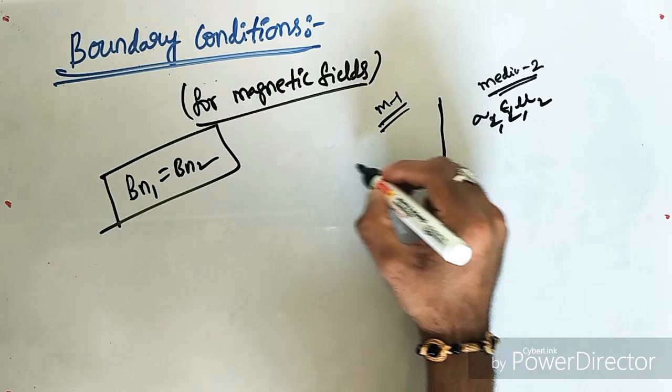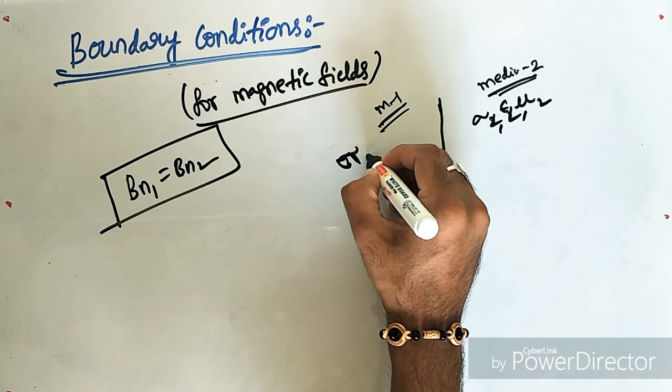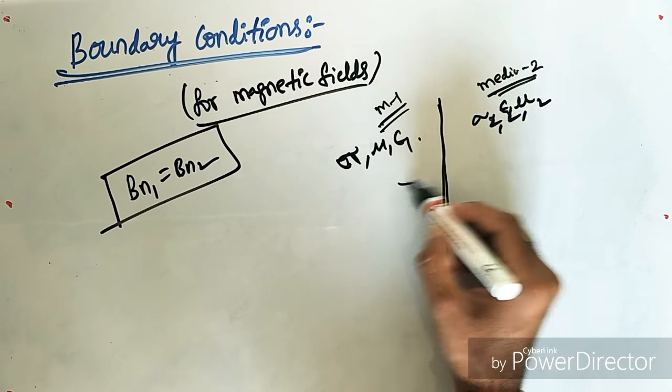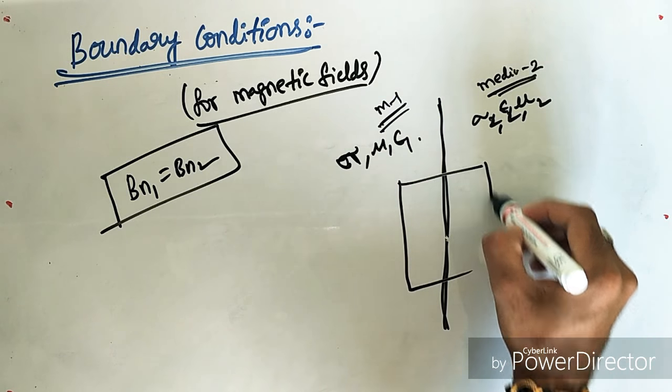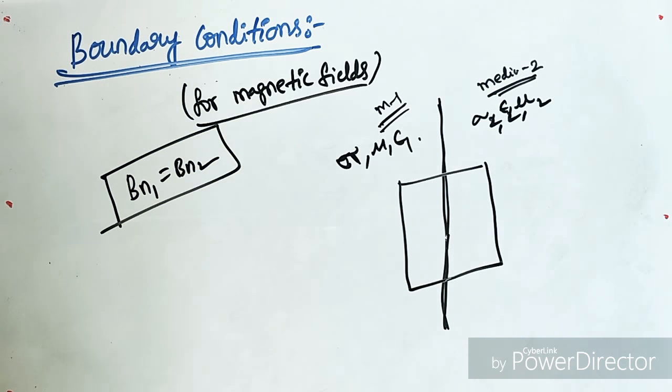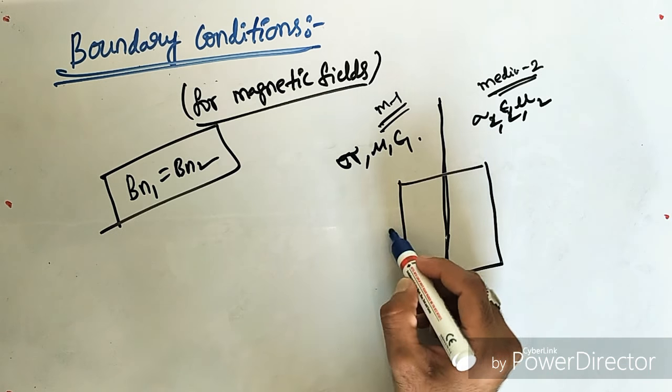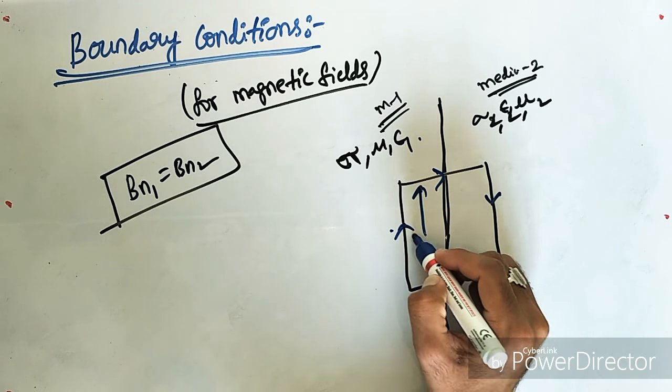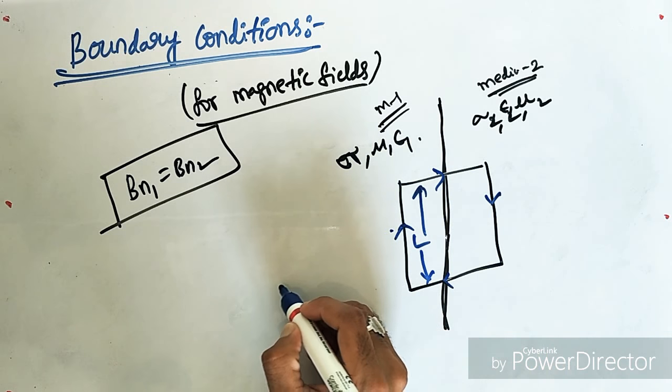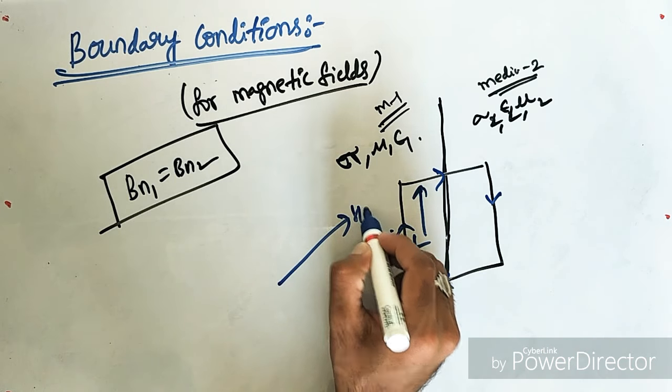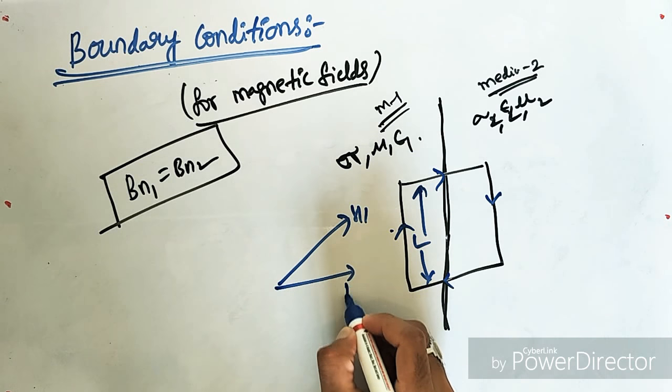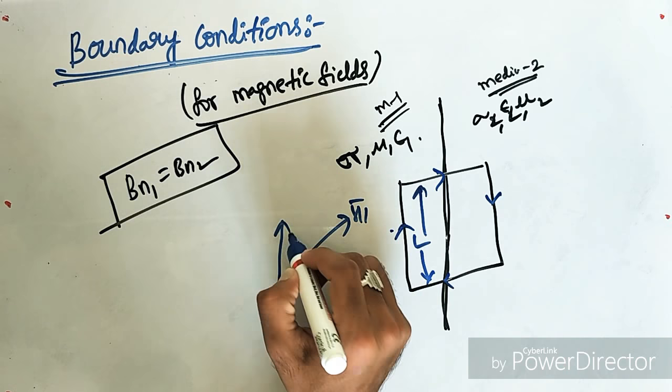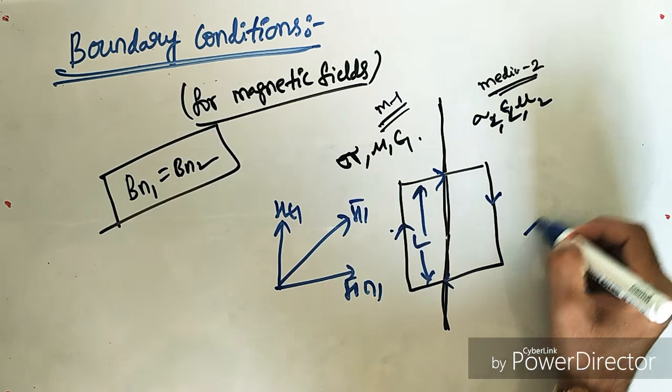These three are for medium 2 and this for medium 1. Now, if I take a closed loop, let in this direction it is flowing and the length of the loop is L. Let the magnetic field in medium 1 is H1 bar. And this is the normal component and this will be my tangential component.